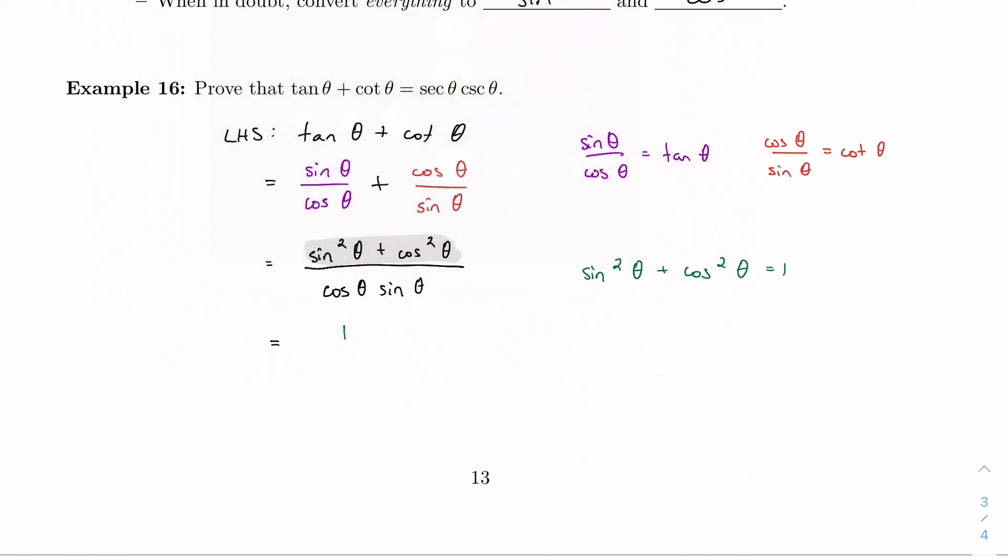I have one over cosine sine. And any time I see a one over, well, that's kind of a hint that we have a reciprocal here. So let's use our reciprocal identities. One over cosine is secant. And one over sine is cosecant. And that's my left-hand side. And I'm done with this proof.